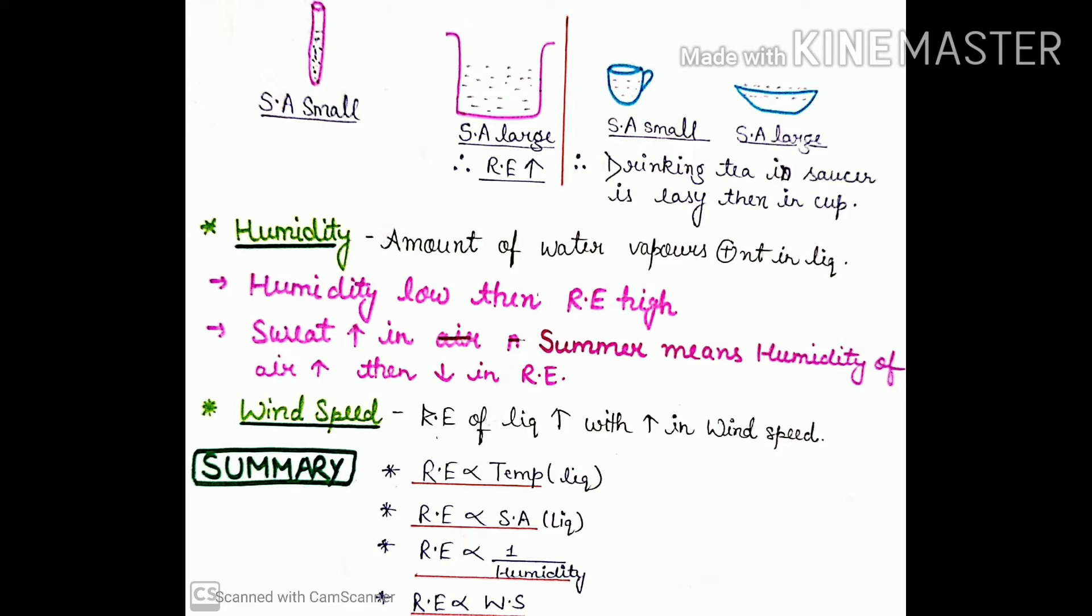In summer, humidity increases which decreases the rate of evaporation. When humidity increases, water vapor in the air is increasing. So one thing is clear: when humidity increases, the rate of evaporation will decrease.